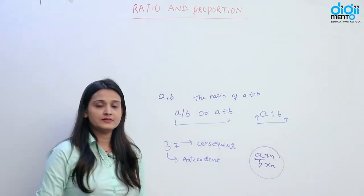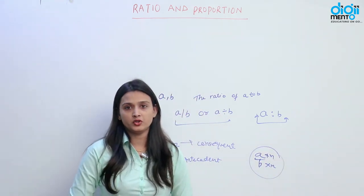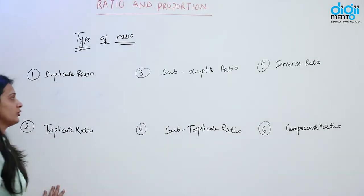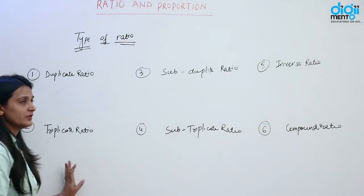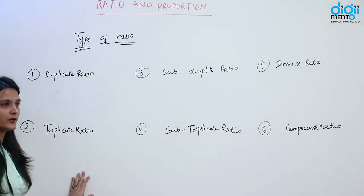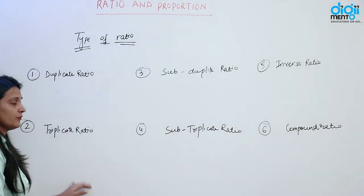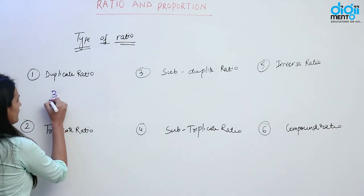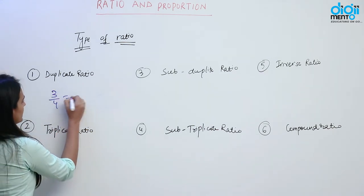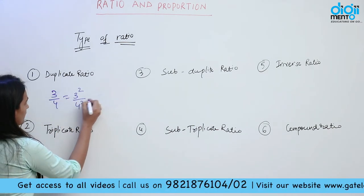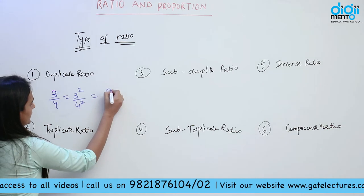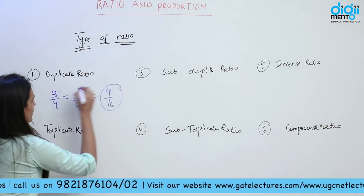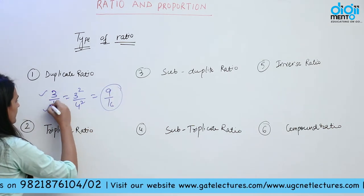Now we will discuss the types of ratios. What is duplicate ratio? Duplicate ratio is the ratio of the squares of the numbers. Suppose if we have 3 by 4, then the square of 3 by 4 must be equal to 9 by 16. This is a duplicate ratio of 3 by 4.